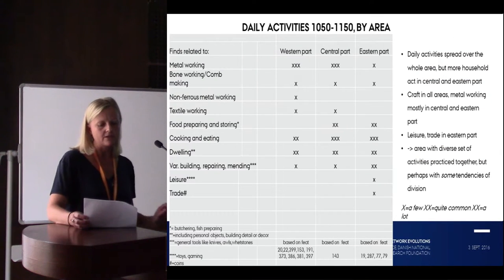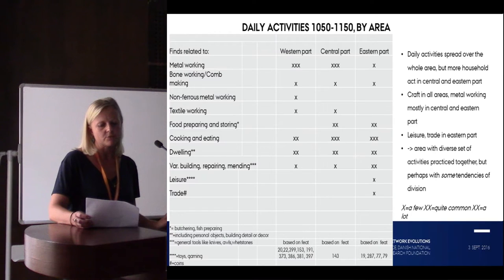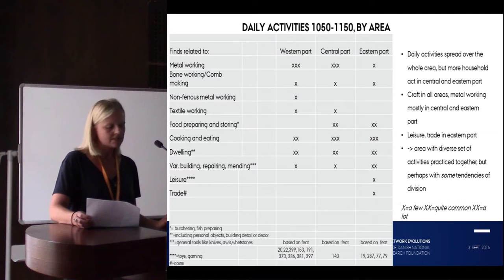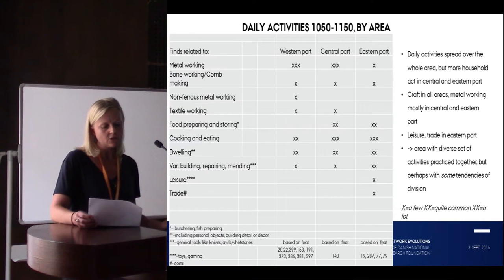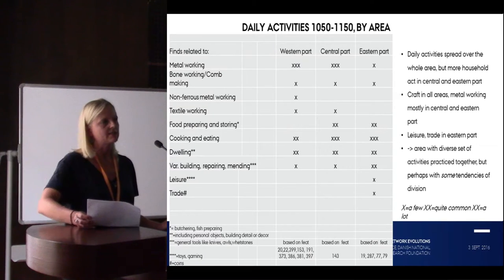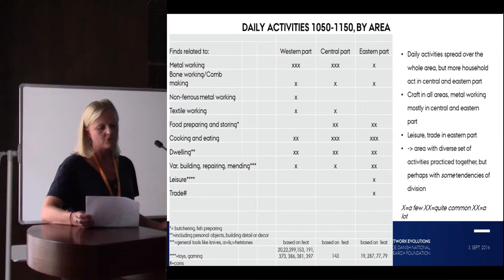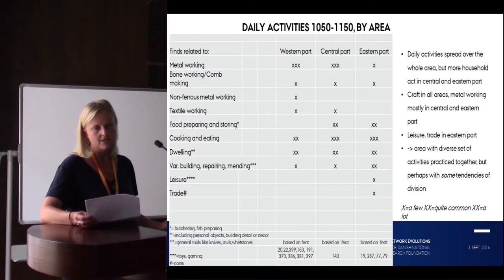For the features with iron working residue, I've summarized what other finds were deposited in the same context, representing activities taking place in connection to the iron processing. I put them into categories according to the activity they relate to. Daily activities were spread over the whole area, but more household activity was in the central and eastern parts. Crafts were in all areas, but metalworking was mostly in the central and western parts. Leisure and trade were found only in the eastern part. This could point to an area with a diverse set of activities, but with some tendencies of different uses of the sub-areas.